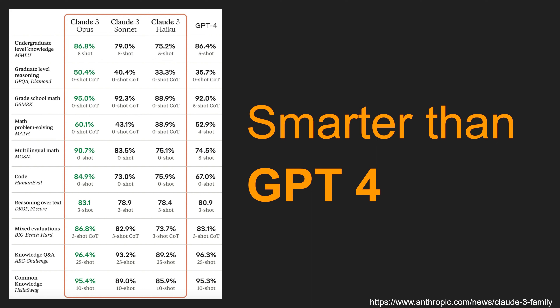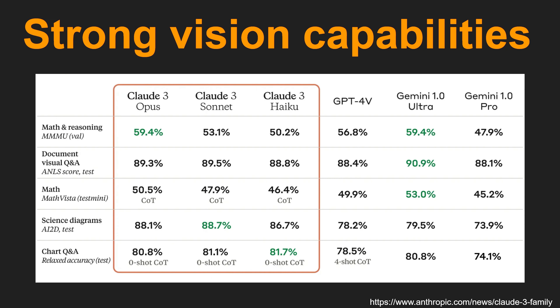Furthermore, Opus — which is the best model in the Claude 3 family — outperforms GPT-4 on various LLM benchmarks. And it outperforms GPT-4 on vision as well, as you saw in my demo on how it accurately understands stock charts or stock news in image formats.